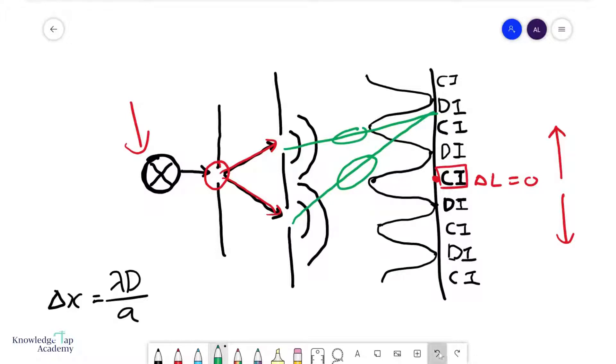And as I move further, these path lengths get larger and larger in terms of their difference. And so as you start to move away from the center, the path difference starts to increase gradually.